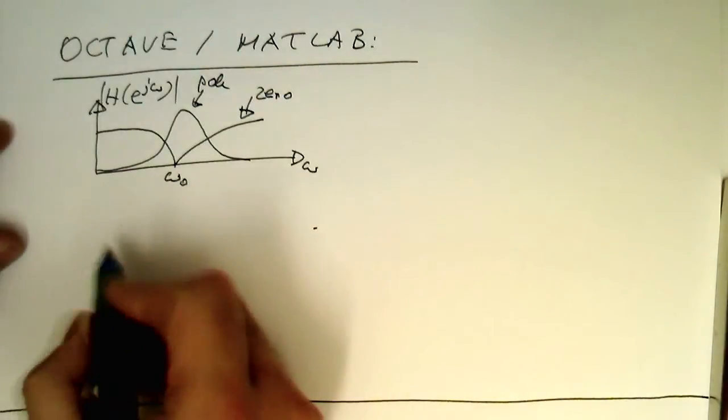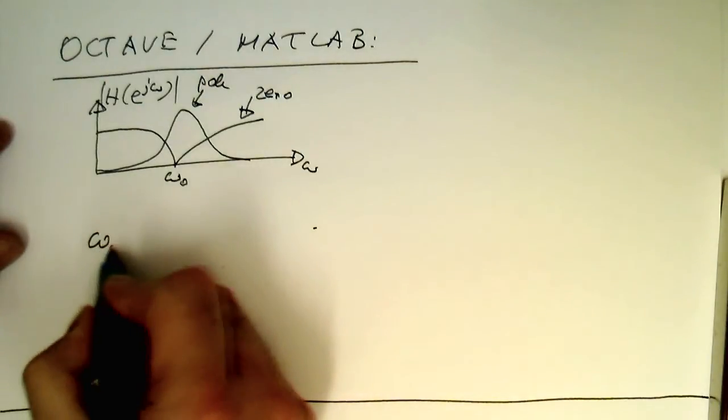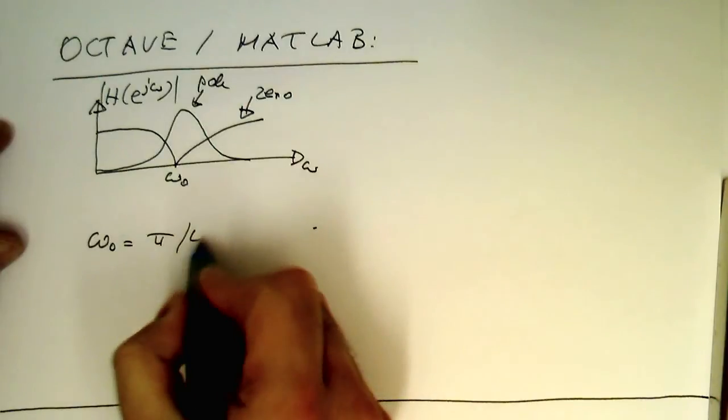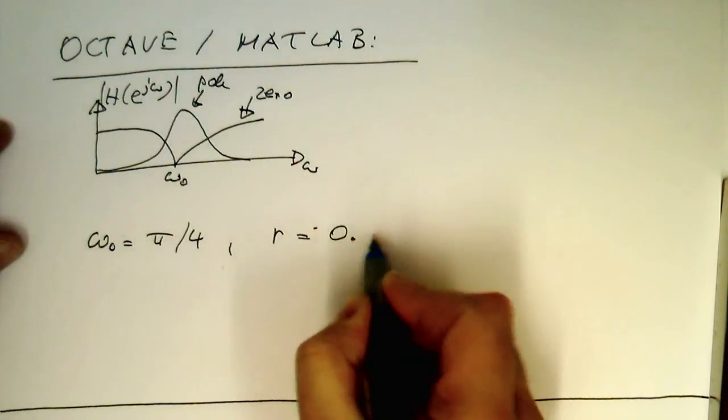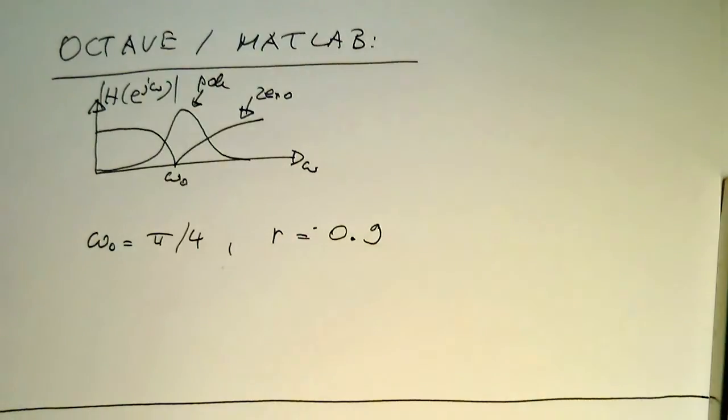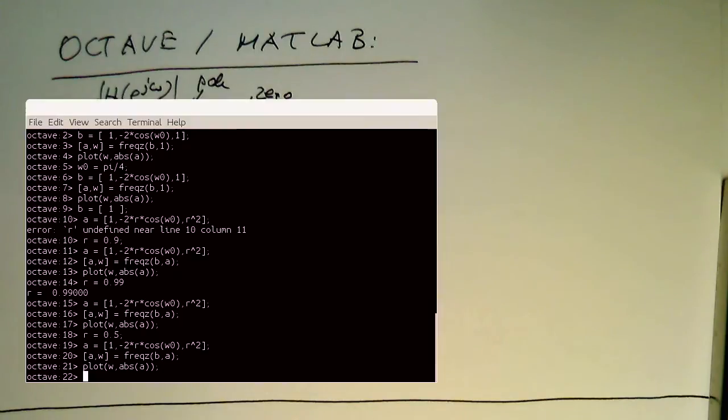So let's start here again. Let's set our omega zero to pi quarter and our R to 0.9. And let's see what we are getting out there in MATLAB here or Octave.